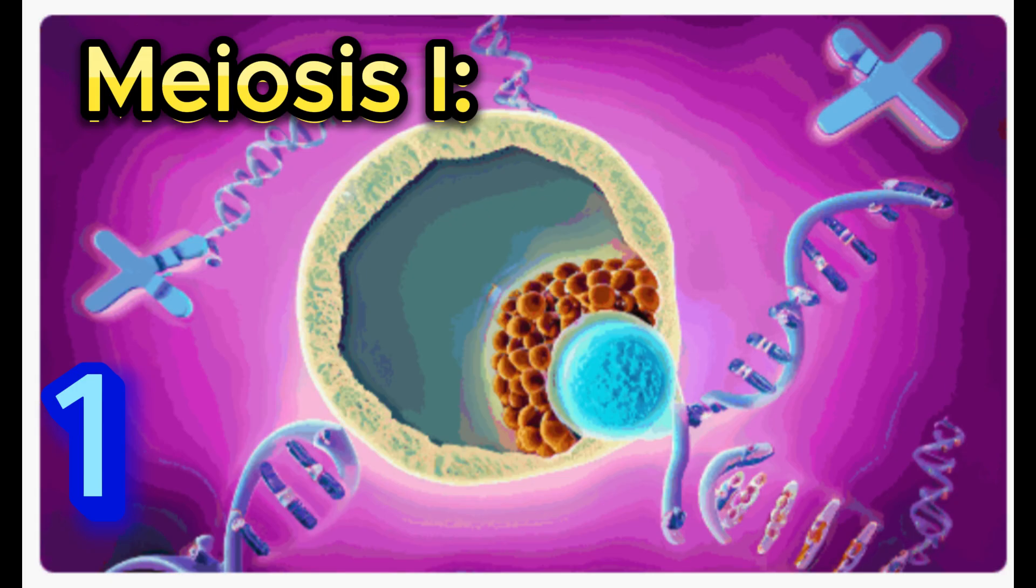Meiosis 1. Number 1: Interphase. The cell prepares for meiosis with DNA replication and the formation of duplicated chromosomes called sister chromatids.